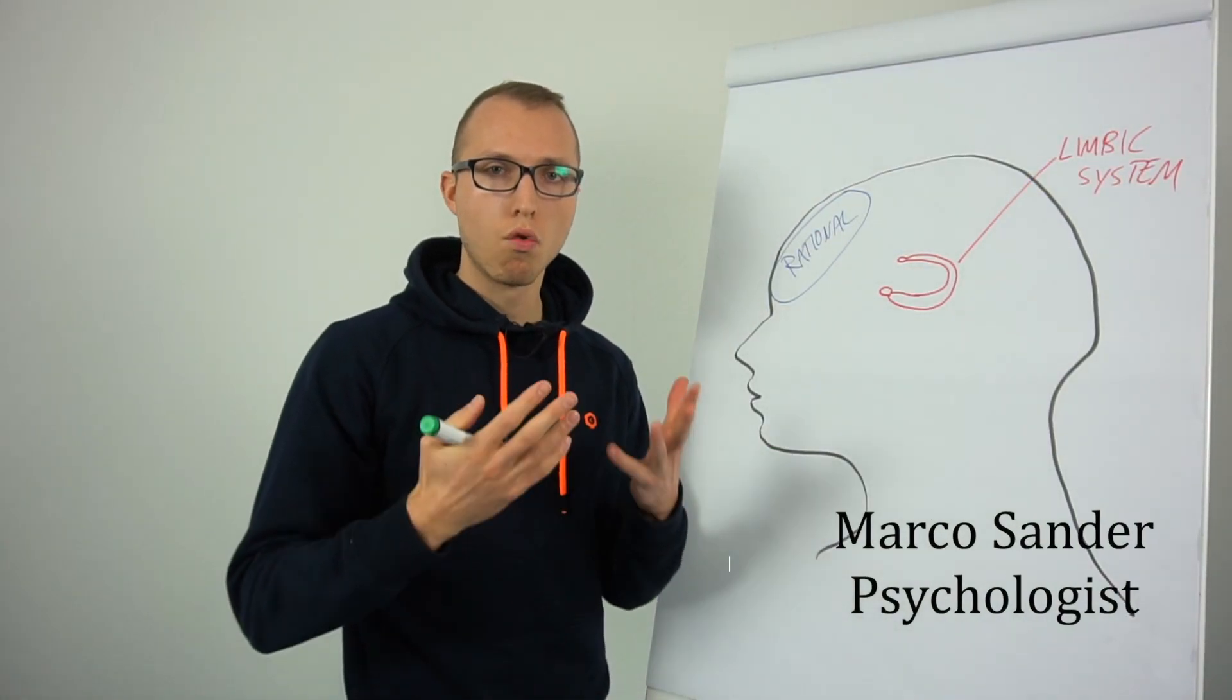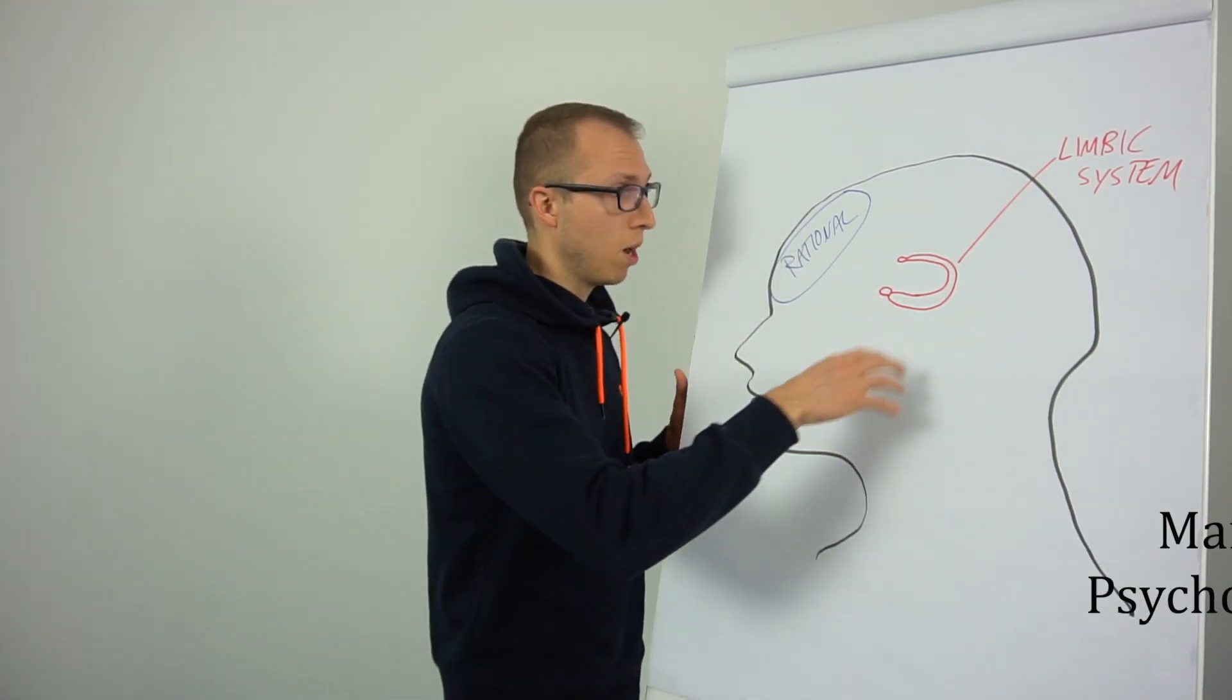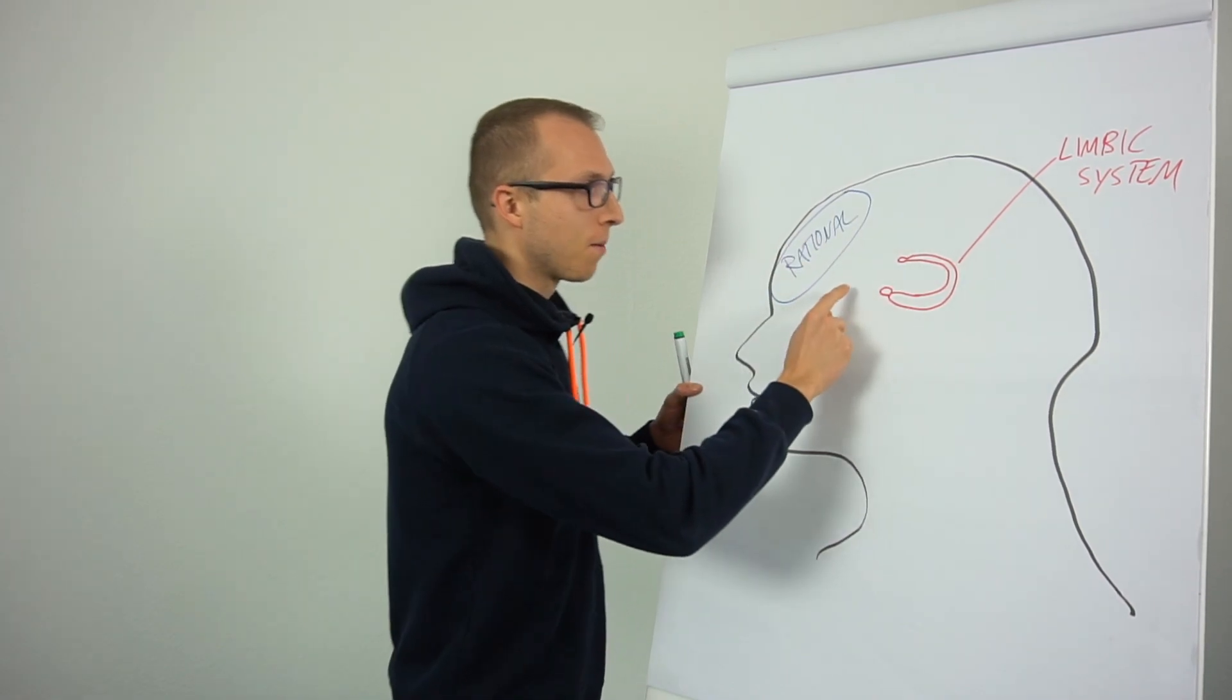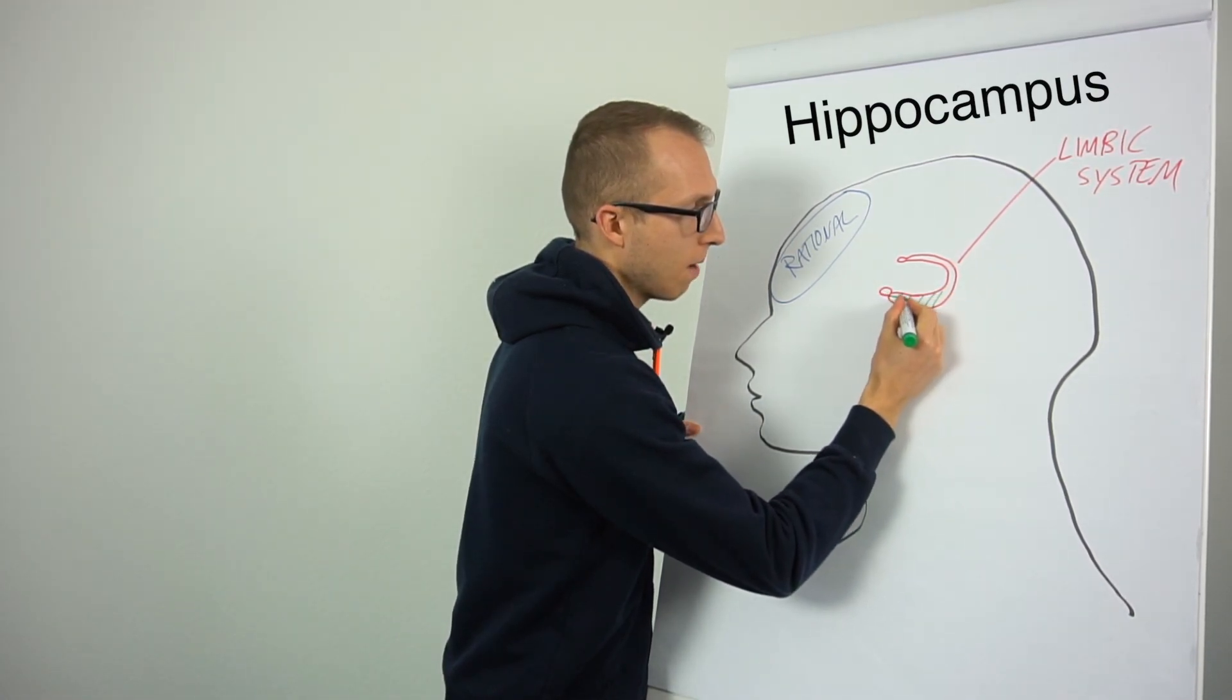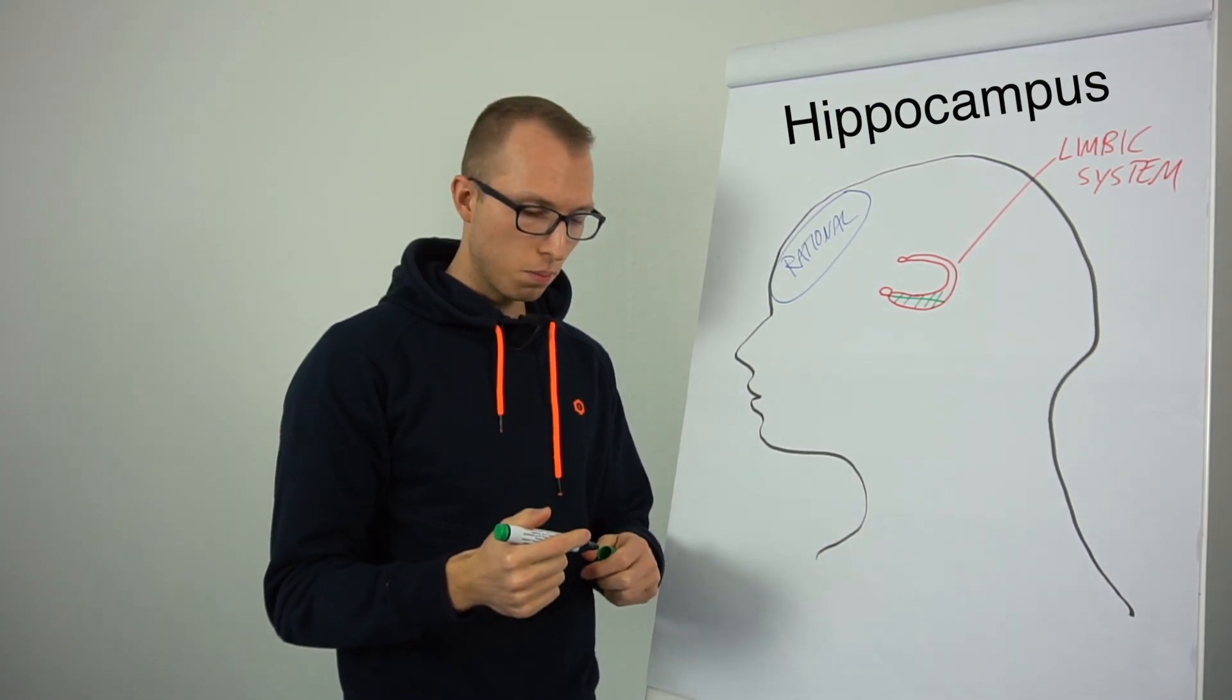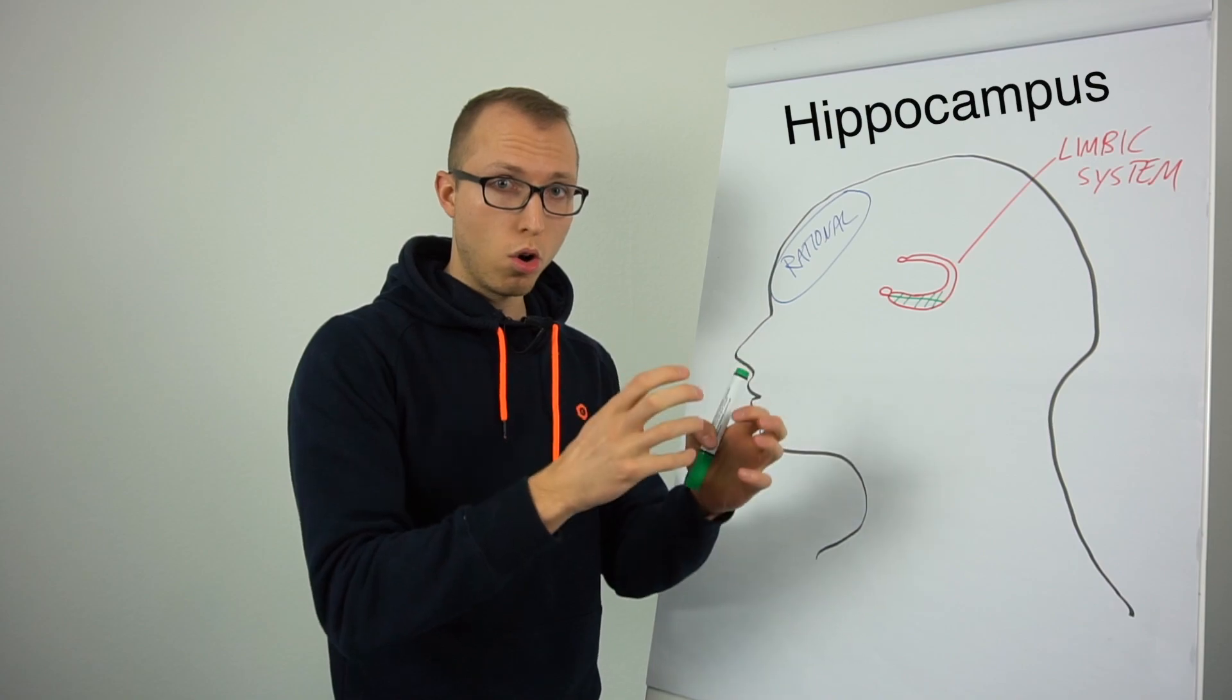Why can we especially remember things well that were emotional? We already learned in the previous video about the limbic system, the emotional system. One sub-part of this system is the so-called hippocampus. The hippocampus is right here, and this part is also especially responsible to store your information and what you learned into your long-term memory.